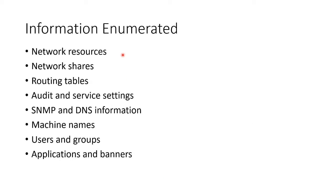The kinds of information you're going to get include stuff about the network, including computers and shares, routing tables, service settings, audit settings, SNMP and DNS information, machine names, users and groups including email addresses, applications and banners. And actually a lot of stuff can be enumerated, even more than this.